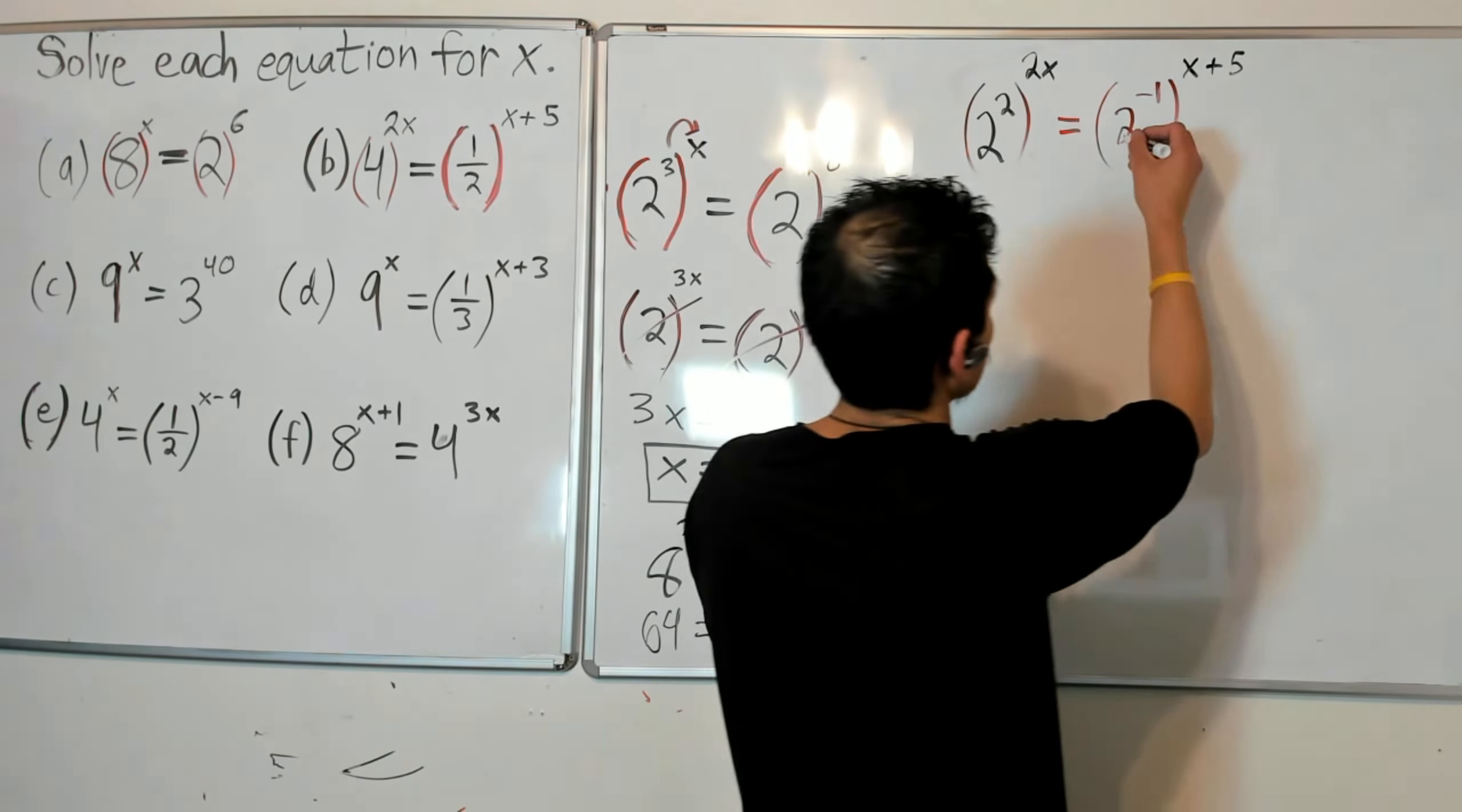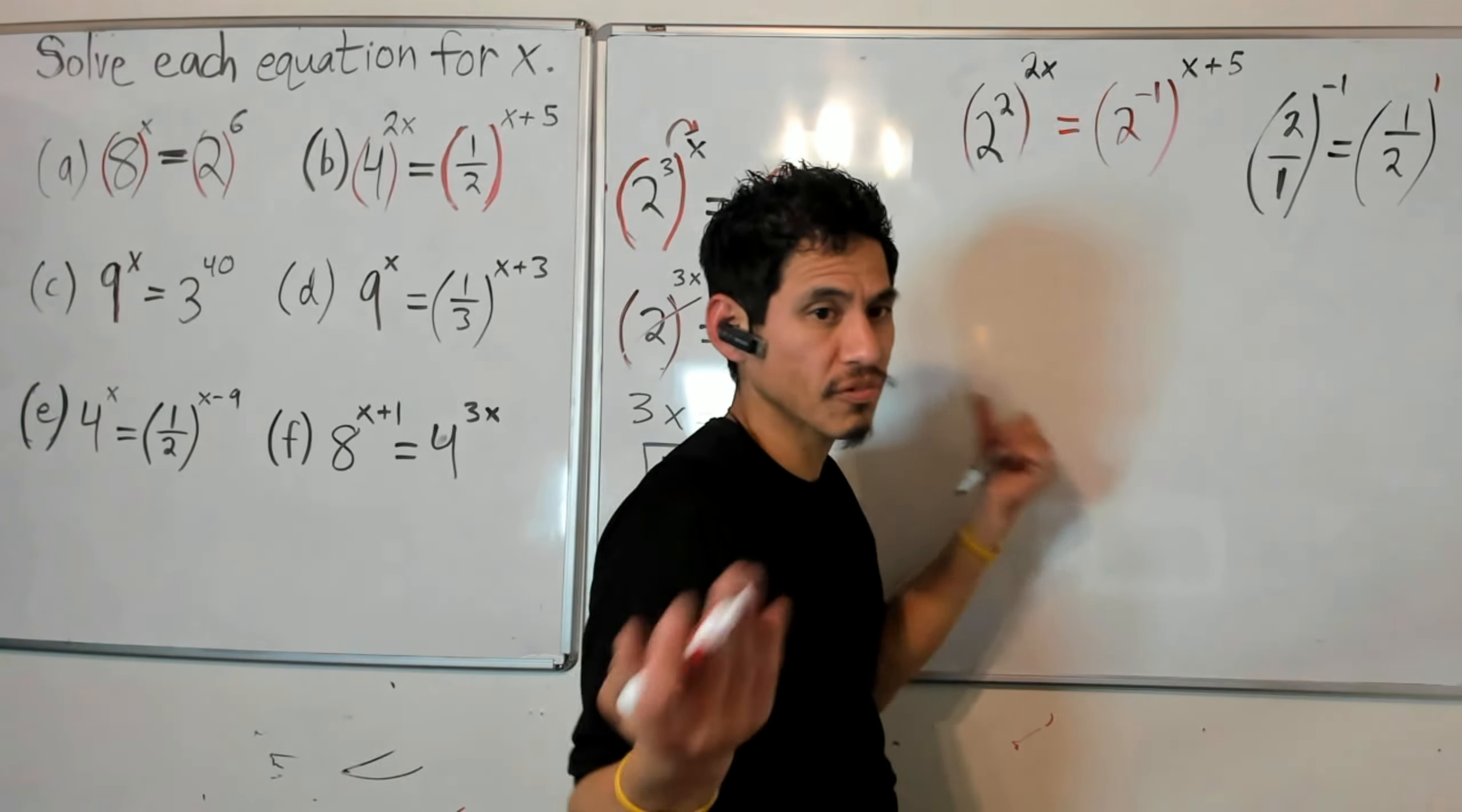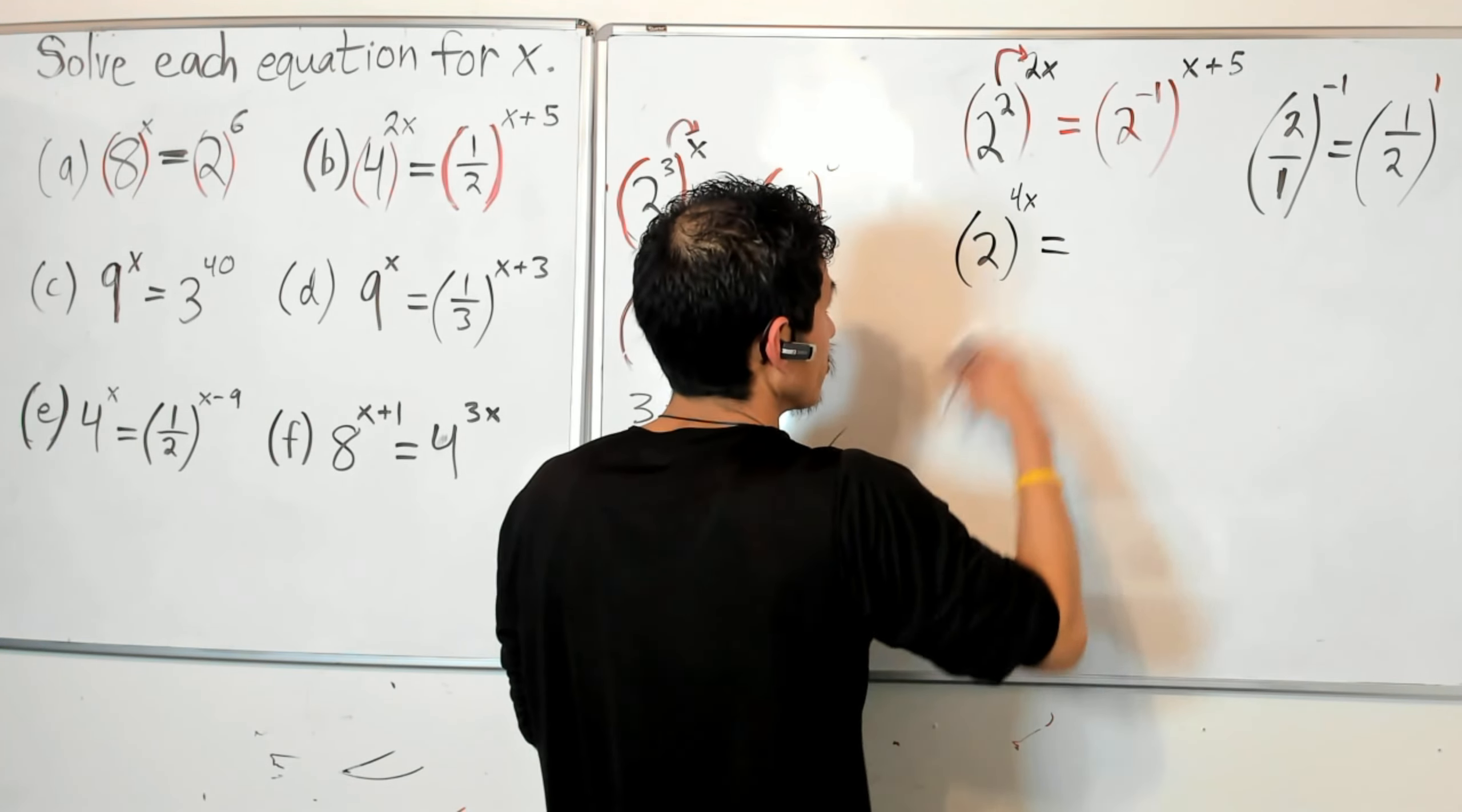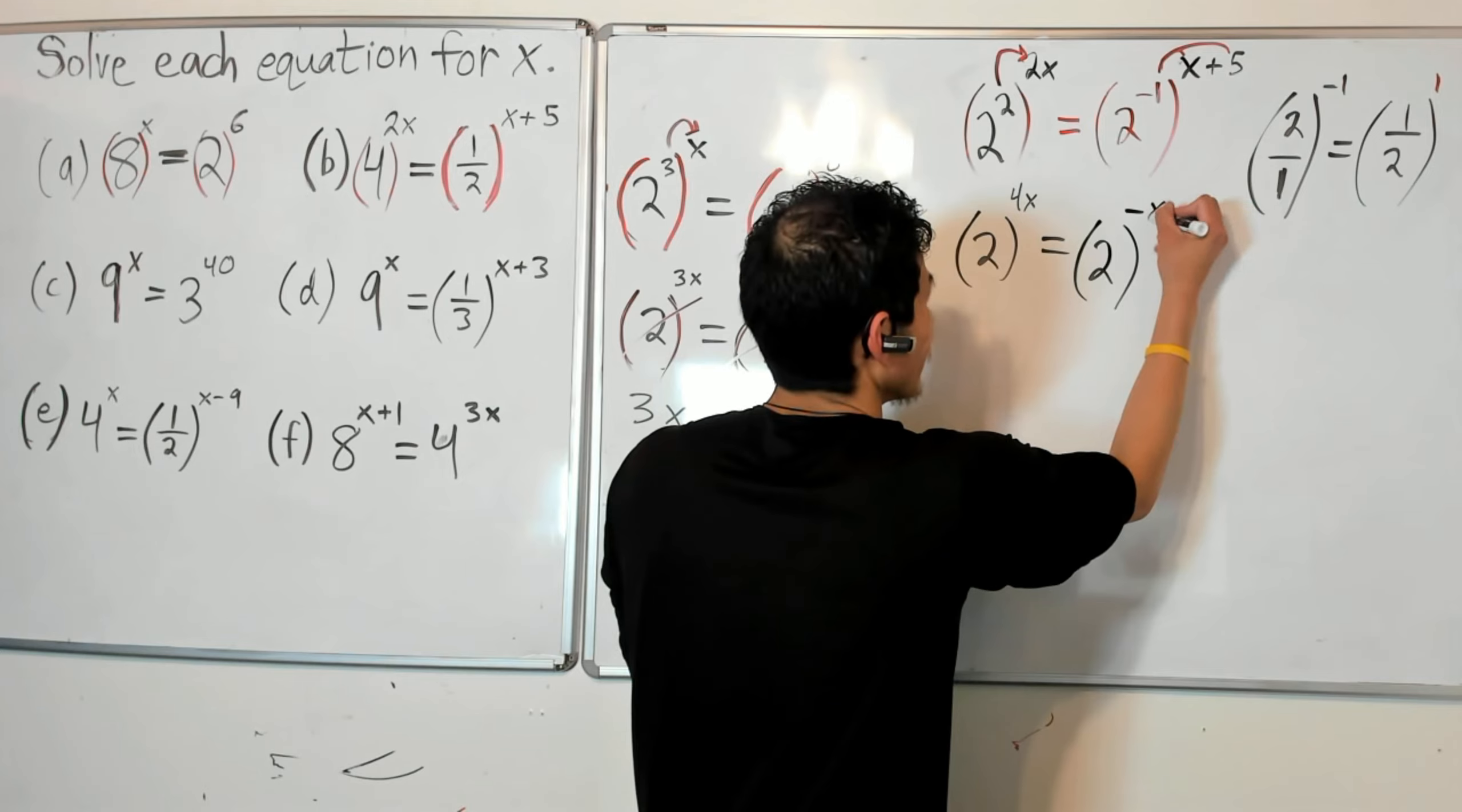2 to the negative 1, that's 1/2. Because 2 to the negative 1, you can write 2 as 2 over 1. 2 to the negative 1 is just the same as 1/2 to the 1. This is one that usually gets my students, you know, fractions, that whole thing. So 2 to the negative 1 is the same as 1/2 to the 1 power. Alright, so then you can see that now I can distribute this exponent. I'll get on the left 2 to the 4x equals, on this one make sure you distribute the negative 1, and make sure you distribute the negative 1 to the x and to the 5.